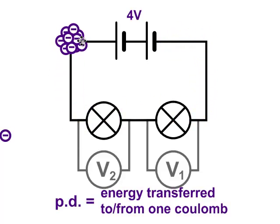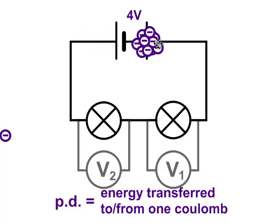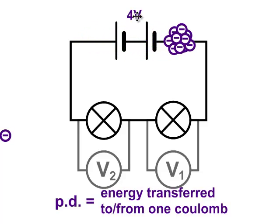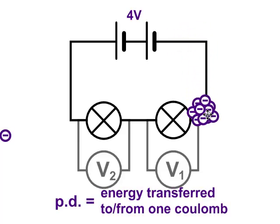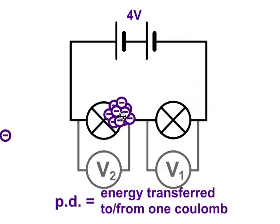As the coulomb of charge goes through the cells, the potential difference across those cells in total is four volts. So this coulomb of charge is going to get four joules of energy, and it has to give that energy up as it goes around the circuit.